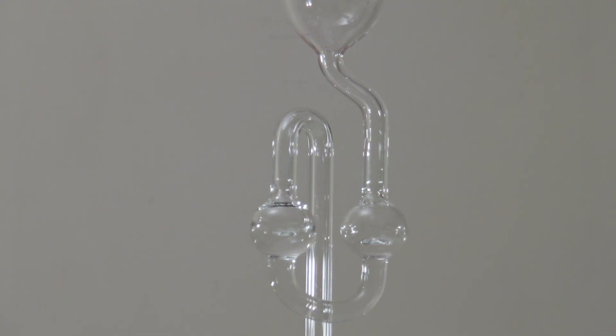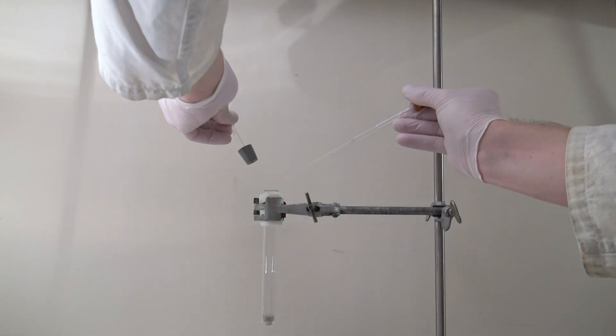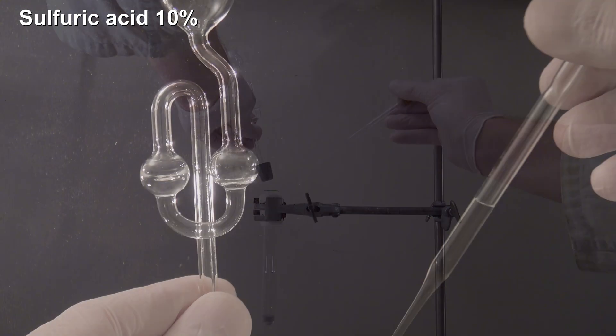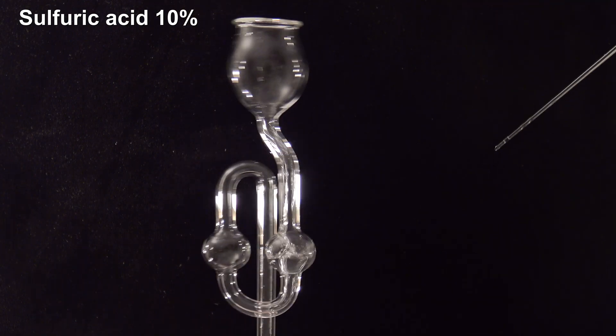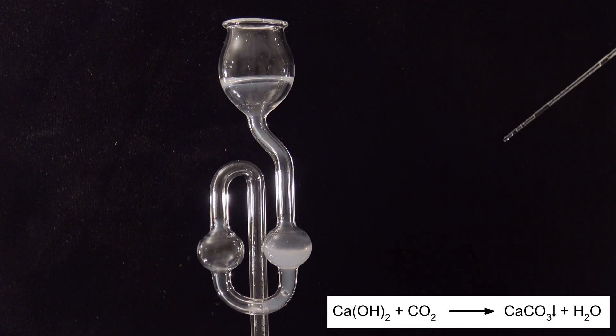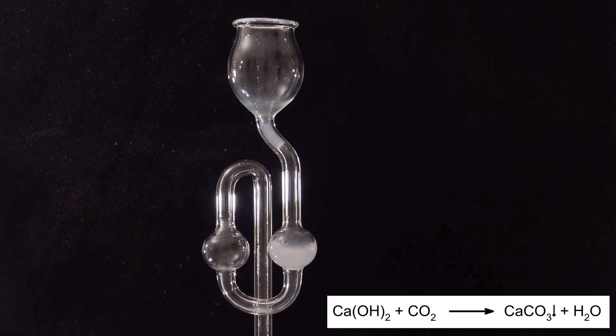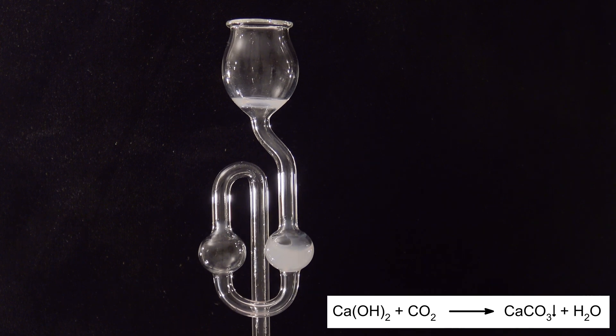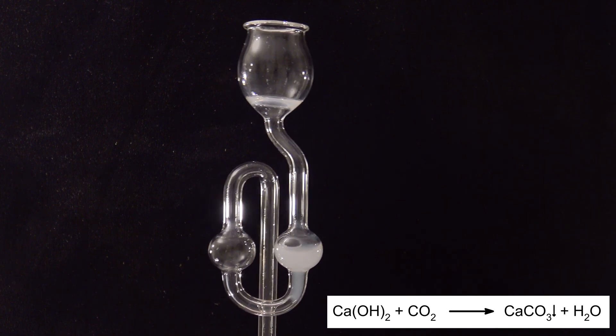Then a sample was added to a test tube. 10% sulfuric acid was added and the tube closed immediately with a fermentation tube. The calcium hydroxide reacts with CO2 to form insoluble calcium carbonate, which is a proof for the presence of carbonates in the sample.